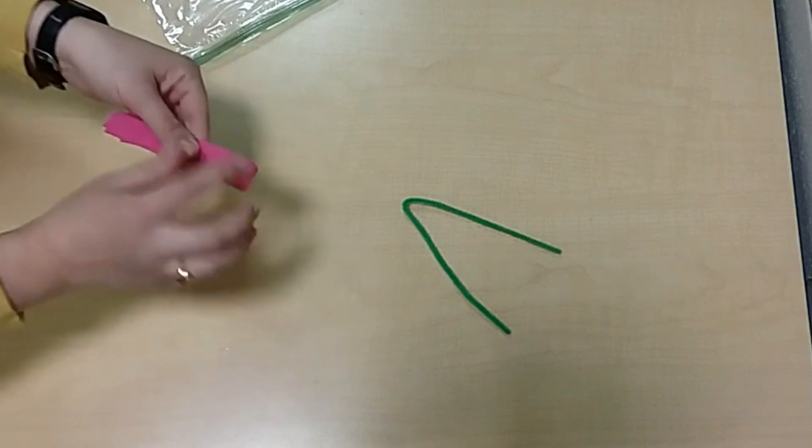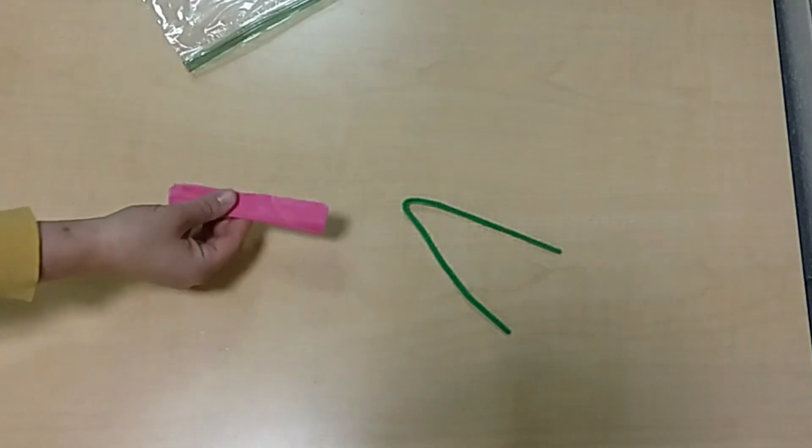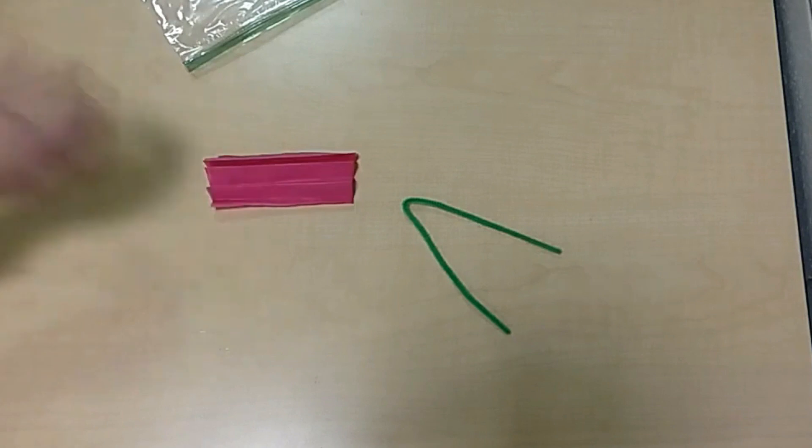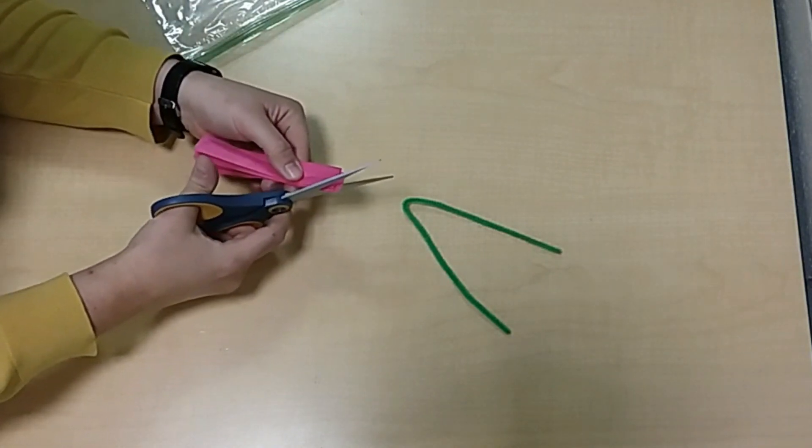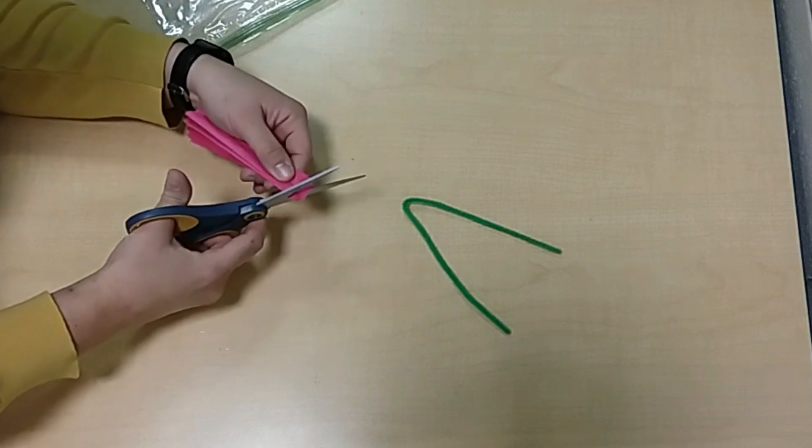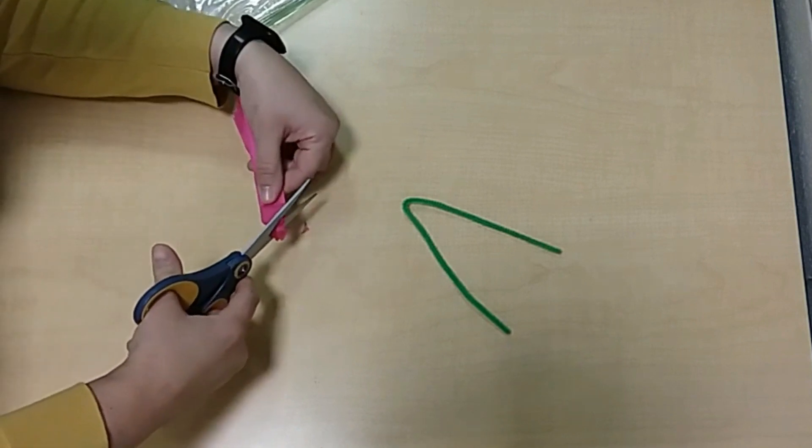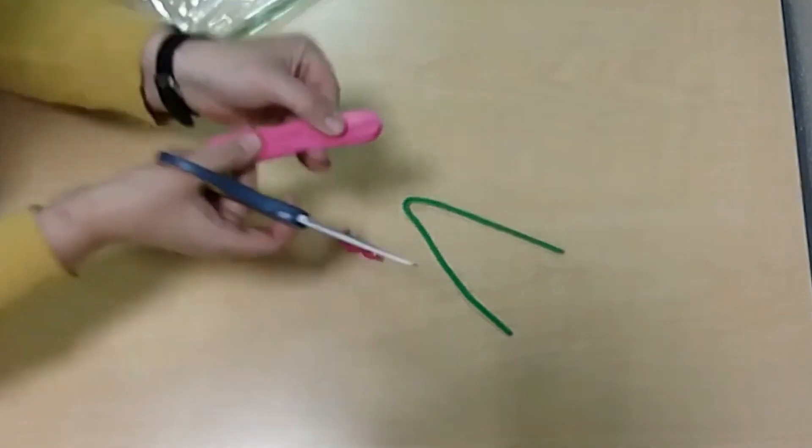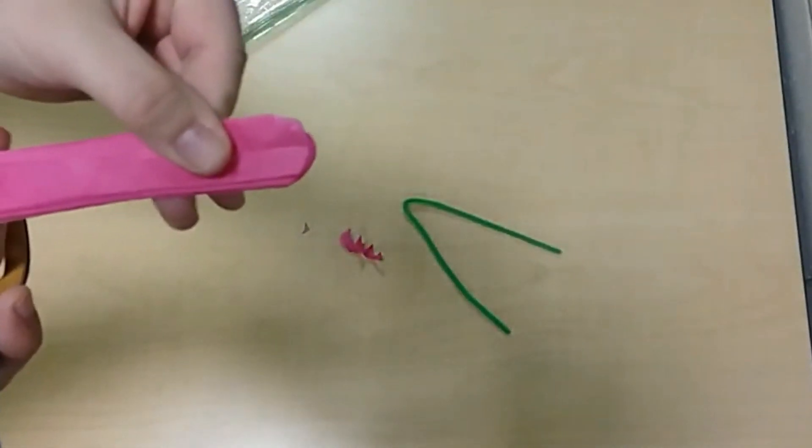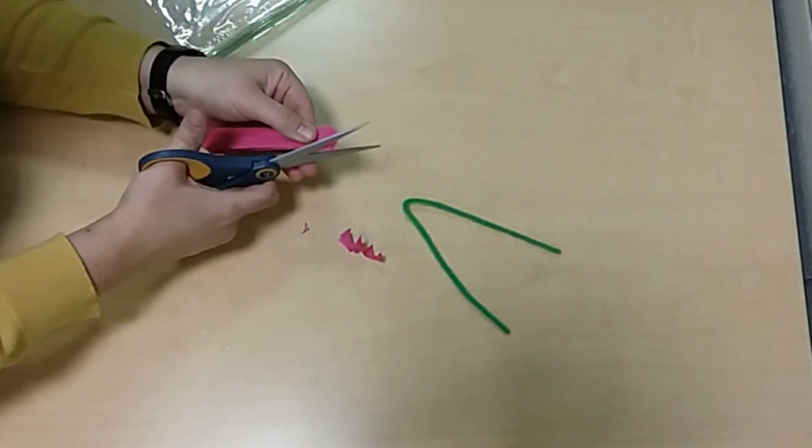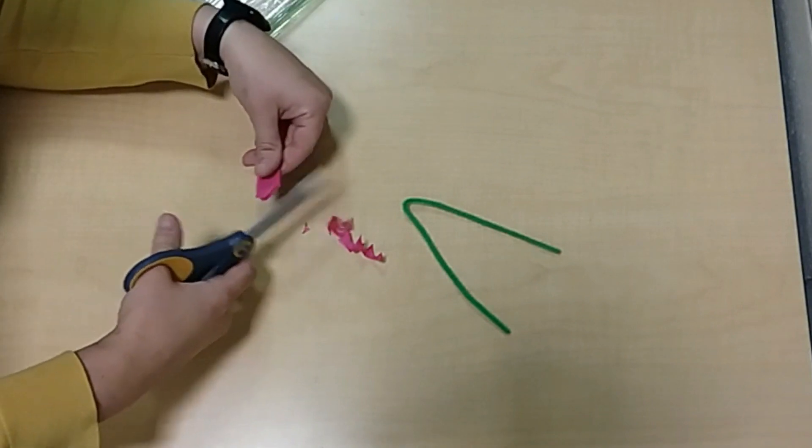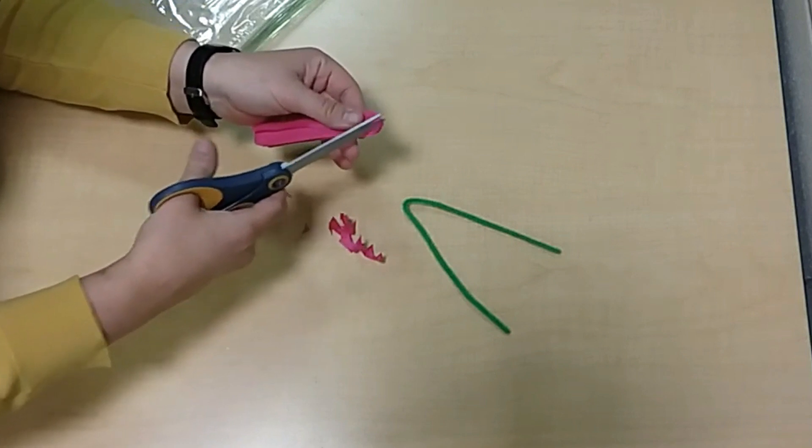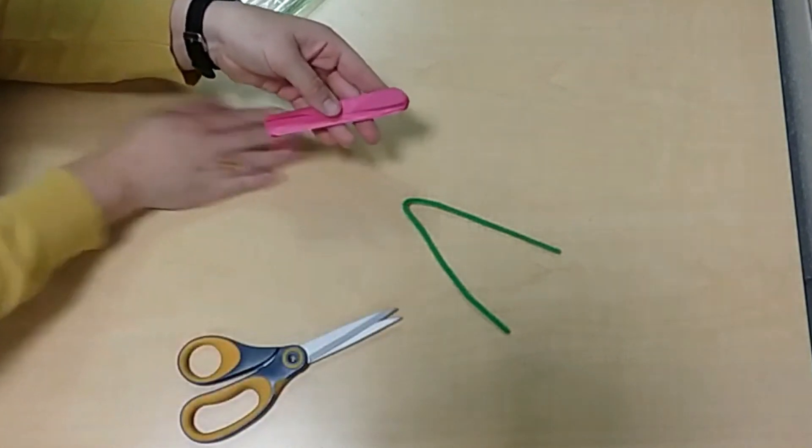And then at the ends you're going to want to decide if you want a pointy petal or a round petal. So I'm going to do a round petal, so I'm going to cut like a half oval like that, and then I'm going to do the same to the other side. If you wanted a pointy petal, you would just cut a triangle shape with a pointy end. So I cut that.